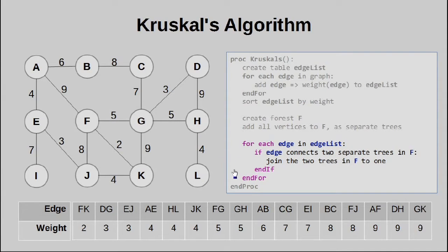So let's start with the loop itself. For every edge in the edge list, we're going to start here and move our way down. If that particular edge connects two separate trees, then we join the two trees together, and implicitly, we accept that edge. So let's see this in action.